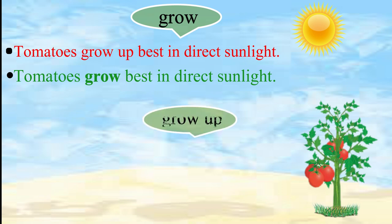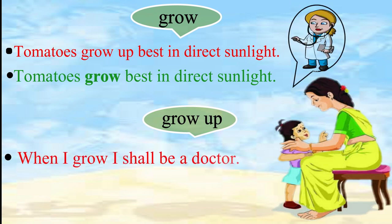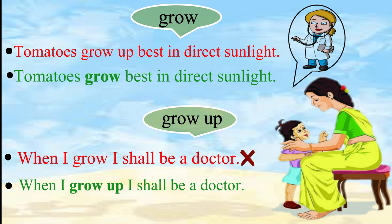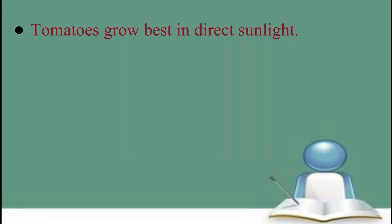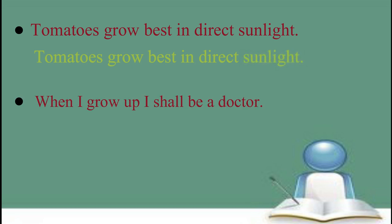Let us take one more example. If we say 'When I grow I shall be a doctor,' this is incorrect. The correct sentence is: 'When I grow up I shall be a doctor.' Now repeat the correct sentences after me: 'Tomatoes grow best in direct sunlight.' 'When I grow up I shall be a doctor.'